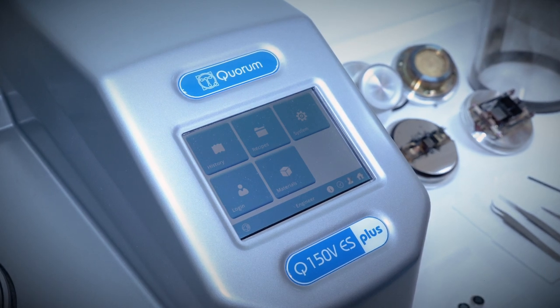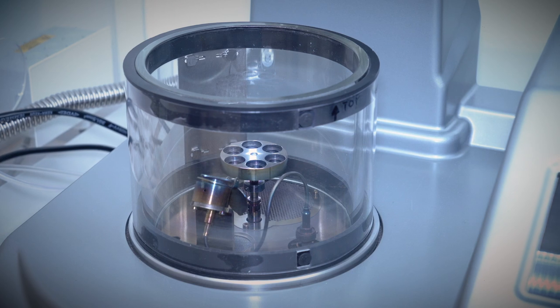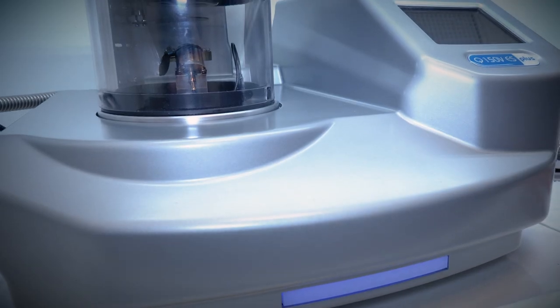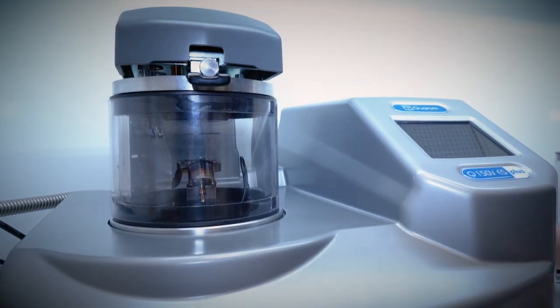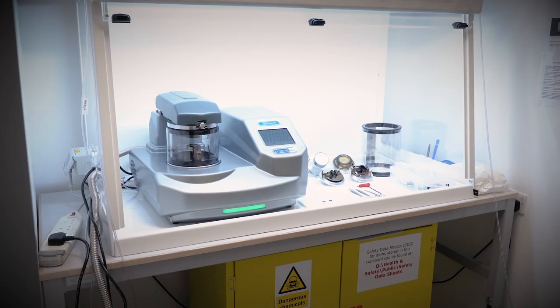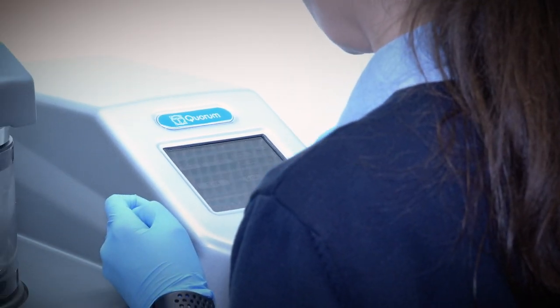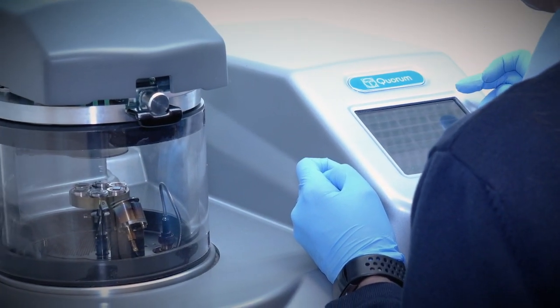The Q150 V Plus is optimized for high vacuum applications with an ultimate vacuum of 1×10 to the minus 6 millibar. The lower background pressure removes oxygen, nitrogen and water vapor from the chamber, avoiding chemical reactions during the sputter process which could otherwise lead to impurities or defects in the coatings.